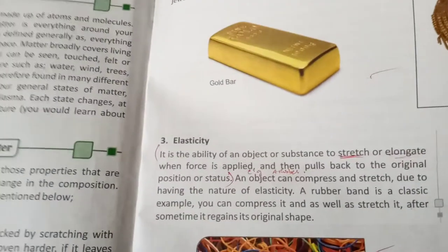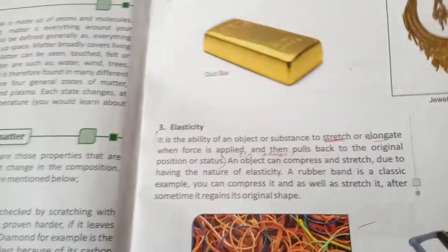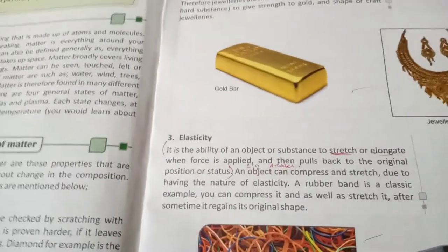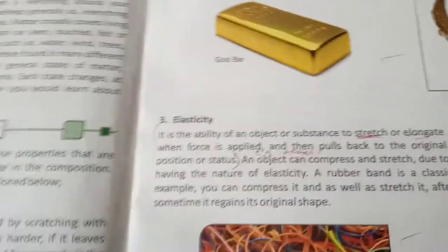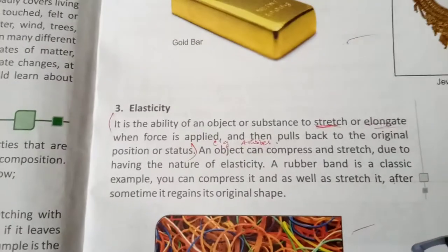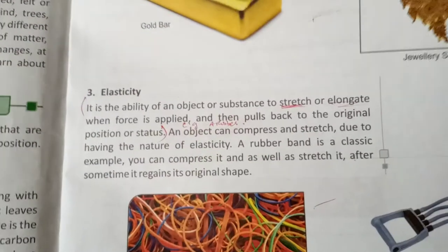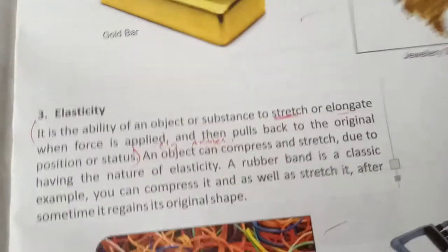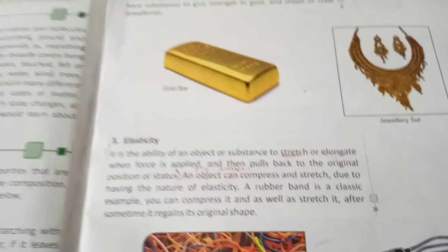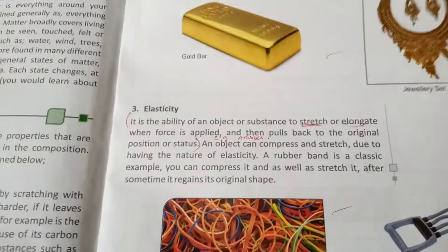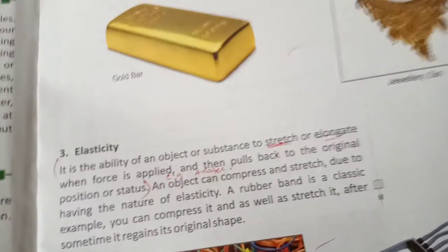You can move them easily. They stretch and elongate, and they can pull back easily. The best thing is to stretch them back to their original position. An object can compress and stretch due to having the nature of elasticity. The way you stretch them, the way you want to compress them back — this is because of elasticity. A rubber band is a classic example of this.